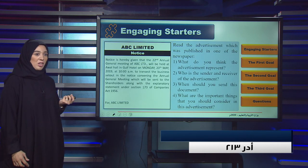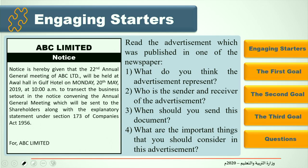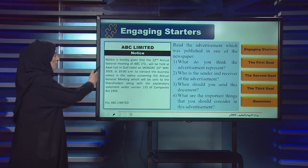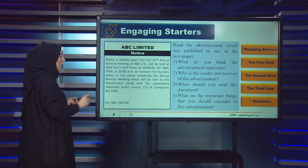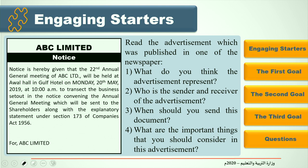Let's start with a starter activity. Read the advertisement which was published in one of the newspapers. ABC Limited Notice: Notice is hereby given that the 22nd Annual General Meeting of ABC Limited will be held at Gulf Hotel on Monday, 20th May 2019 at 10 a.m. to transact the business set out in the notice convening the Annual General Meeting, which will be sent to the shareholders along with the explanatory statement under Section 173 of Companies Act 1956 for ABC Limited.